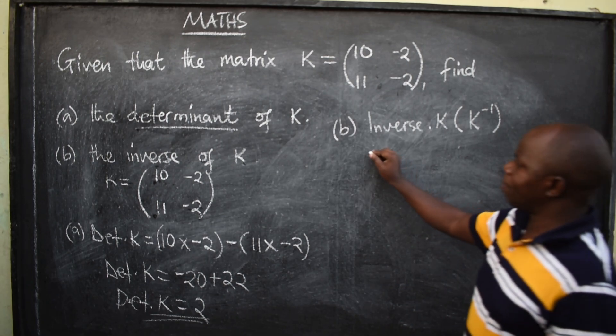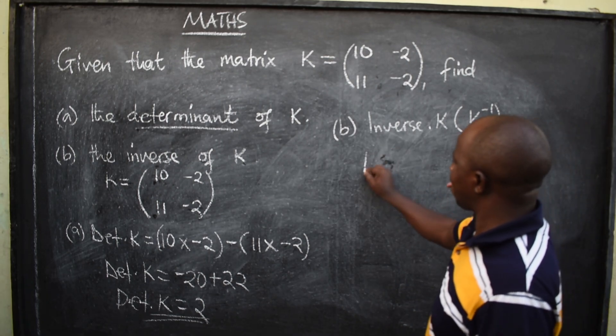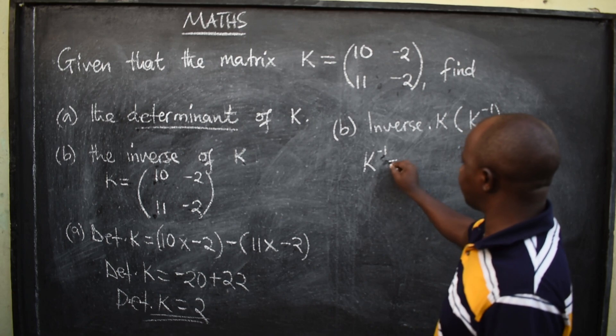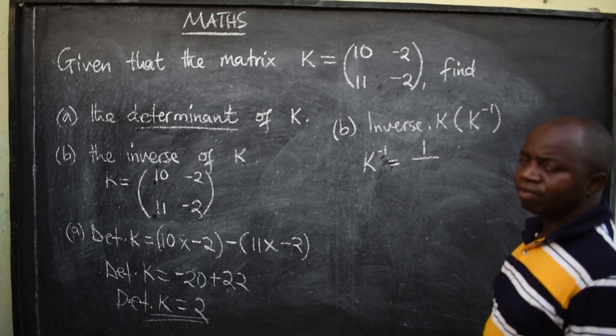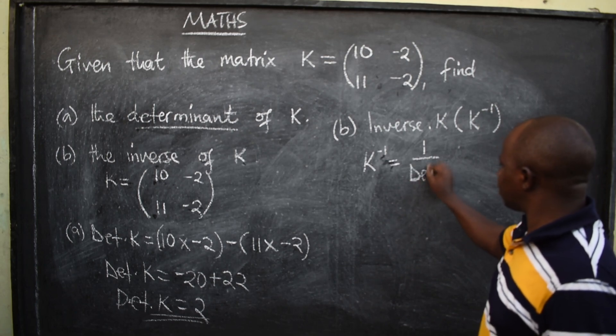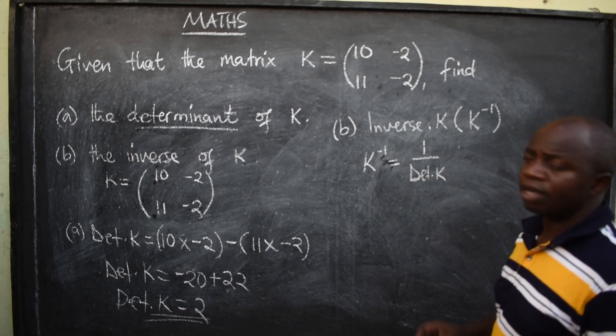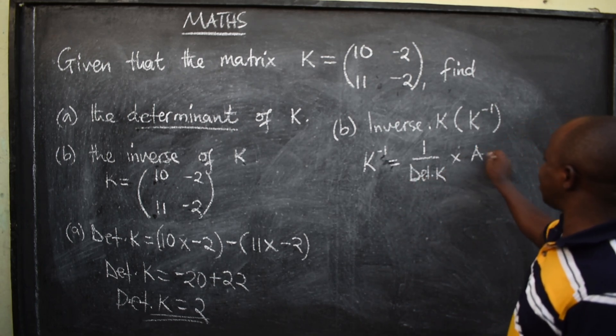so the formula is given by this, inverse of the matrix, 1 over determinant of matrix K, multiplied by the adjoint.